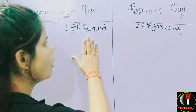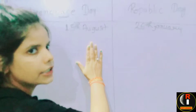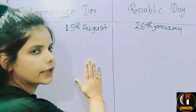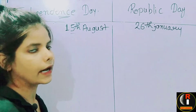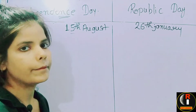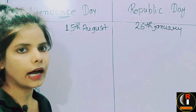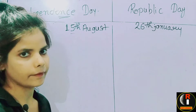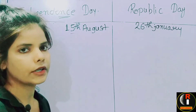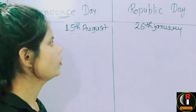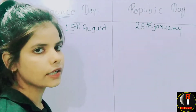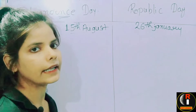On 15th of August 1947, what happened in our country — the Britishers left, and that is why we call it Independence Day.